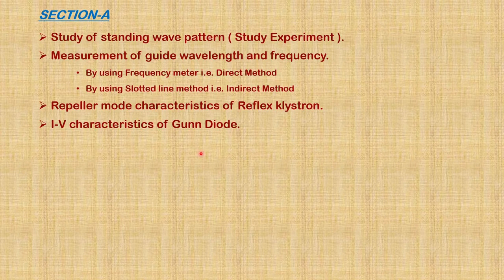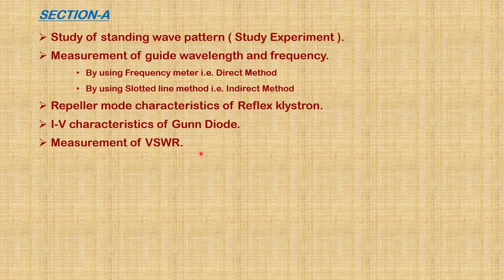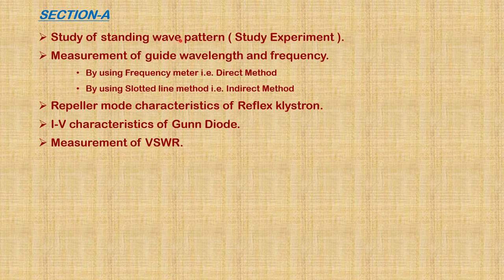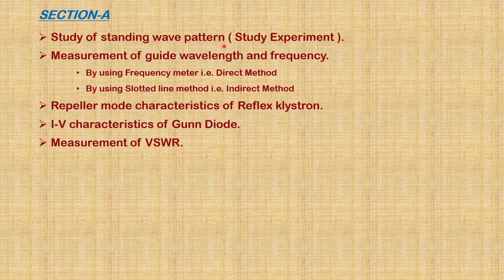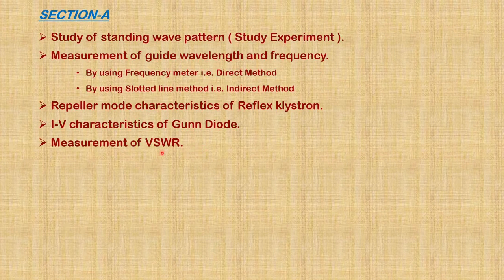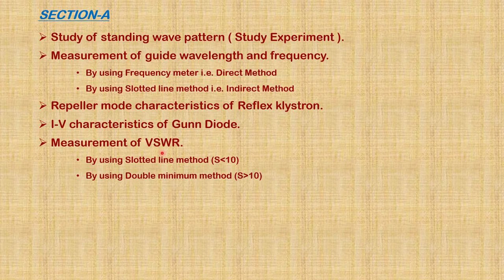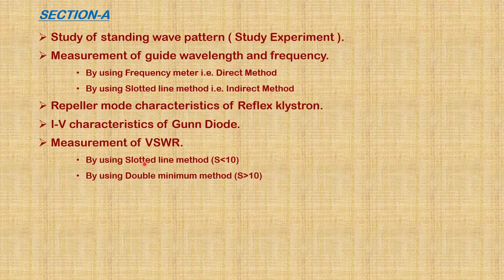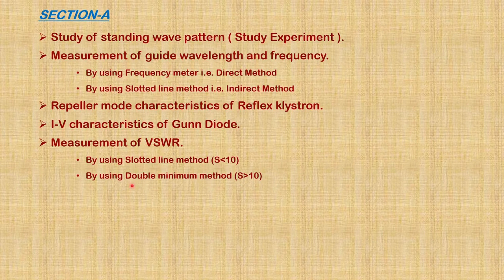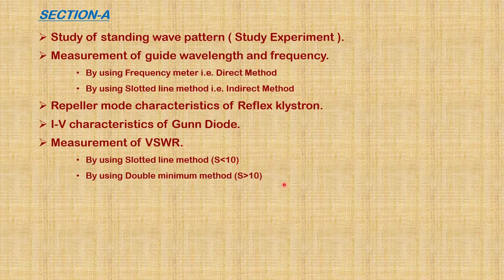Next experiment is measurement of VSWR, voltage standing wave ratio. This is an extension of the first experiment. There we discussed about how standing waves are formed, but here we discuss how to find the value of S. If the value of S is less than 10, we use the slotted line method. If S is greater than 10, we use the double minimum method.